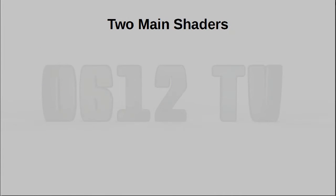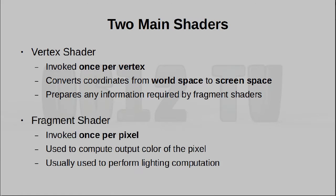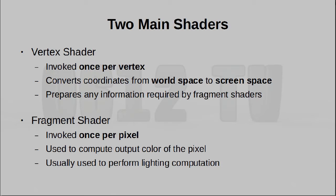Without going into too much detail, the vertex shader is what converts coordinates from world space to screen space, and is invoked once per vertex. Once we know where every vertex lies on screen, we know the areas they fill as well. From there, fragment shaders are invoked to fill up these areas — one invocation per pixel. As you can imagine, this is where things get interesting, because there are many pixels on screen, and that means there are many parallel fragment shader invocations. That is precisely what makes graphics rendering very fast, and that is precisely what we're going to take advantage of for general-purpose computation.